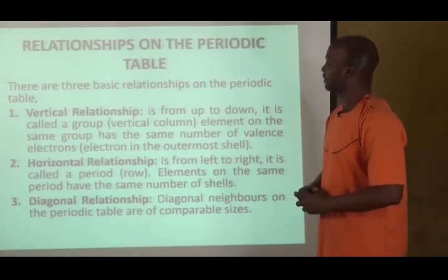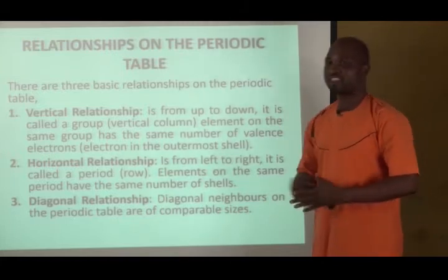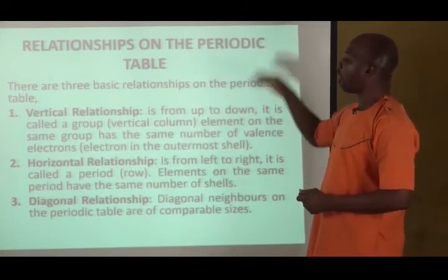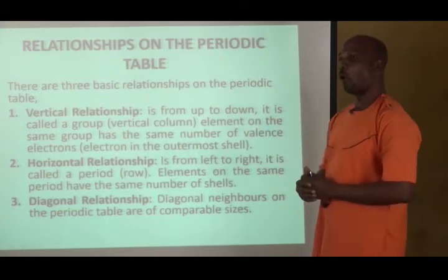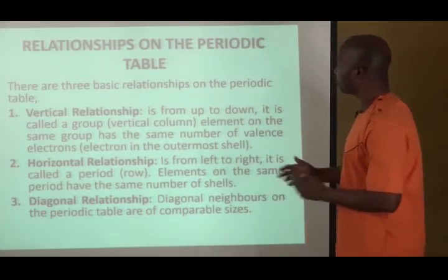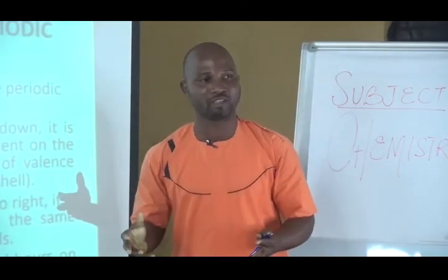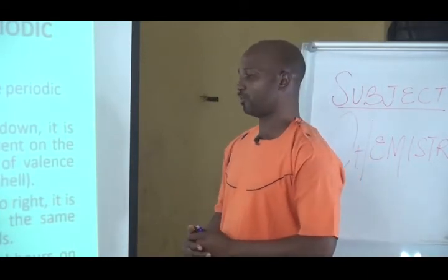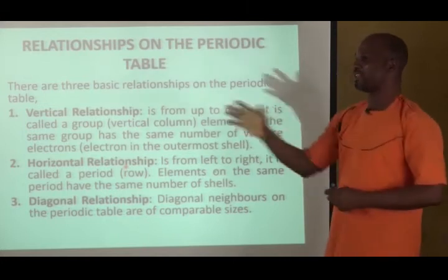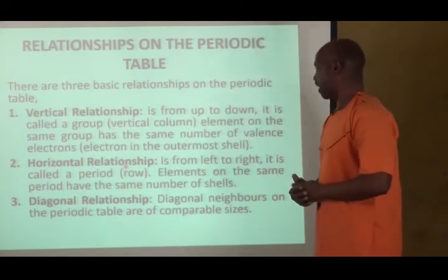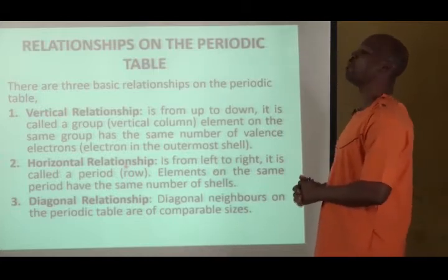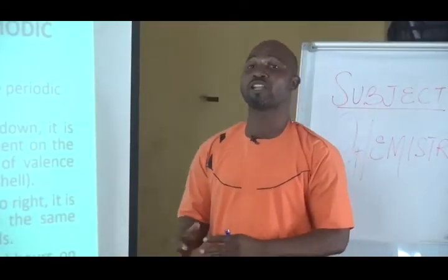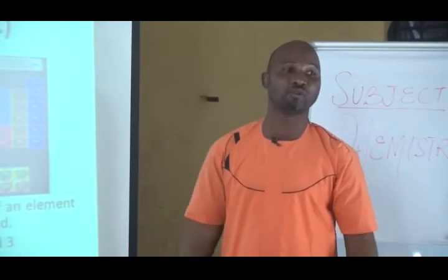There are relationships on the periodic table, broadly classified into three. We have the vertical relationship, which runs from top to bottom, and it is called a group or vertical column. Elements in the same group have the same number of electrons in the outermost shell, also called valence electrons. The other one is the horizontal relationship, from left to right, called a period. Elements on the same period have the same number of shells. The last one is diagonal relationship, which involves diagonal neighbors of comparable sizes.